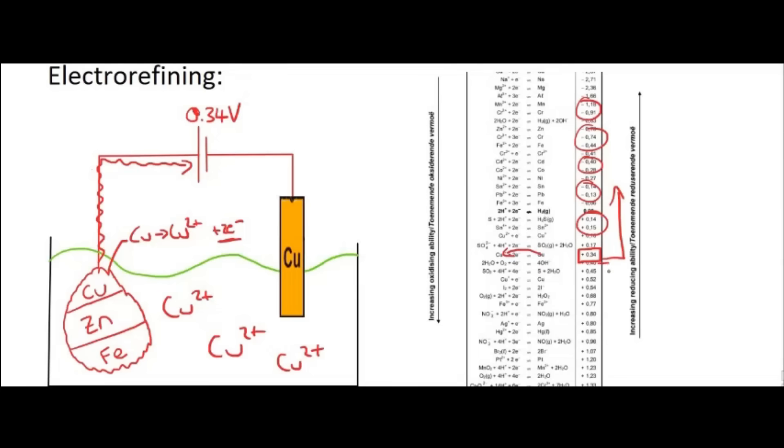But if we look further down, we would see that these voltages are much larger. And so if we had any of those substances, our battery wouldn't be strong enough. So our battery is going to be strong enough to oxidize copper and anything else that is above, because their voltages are much lower.